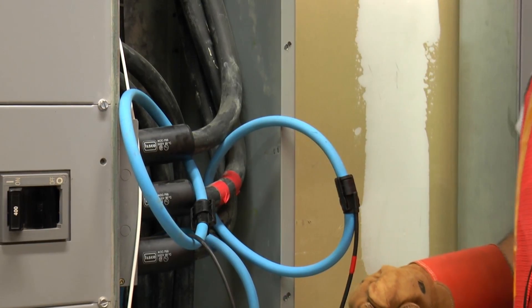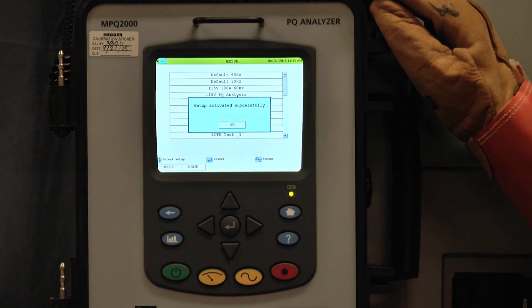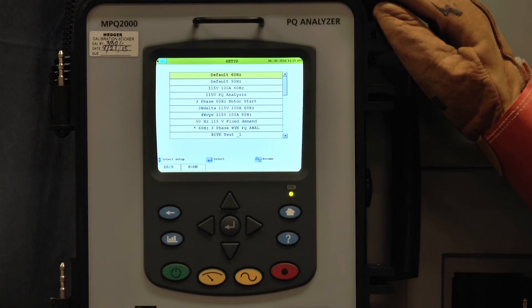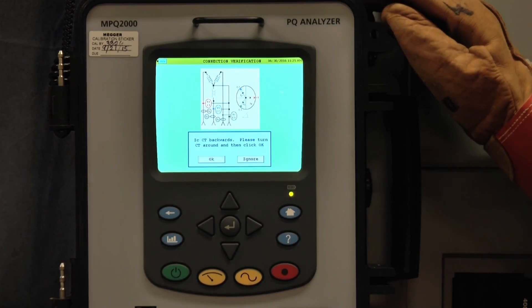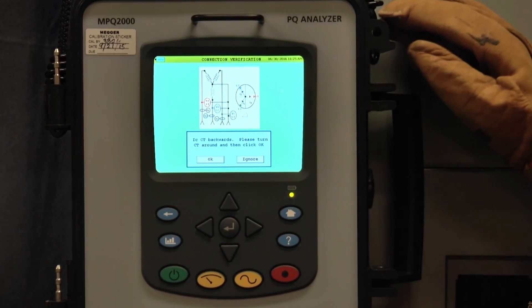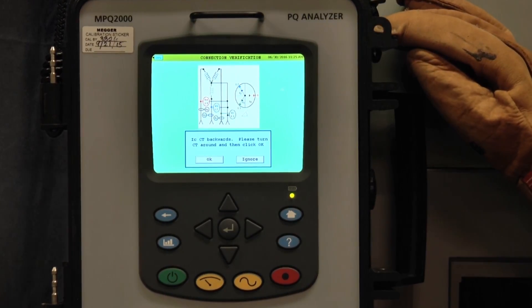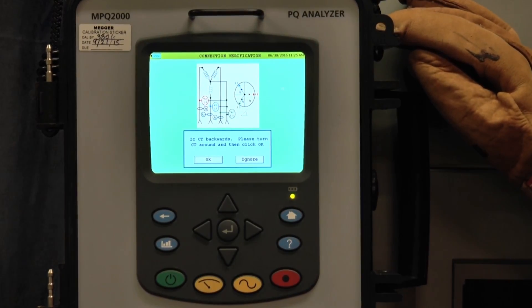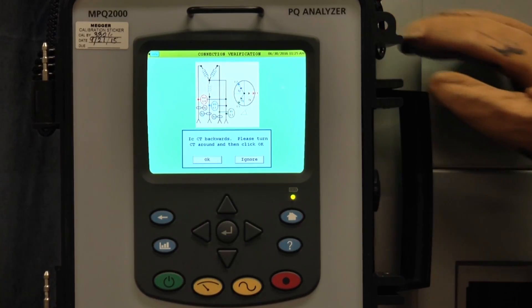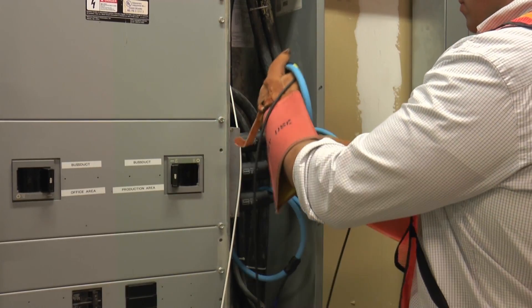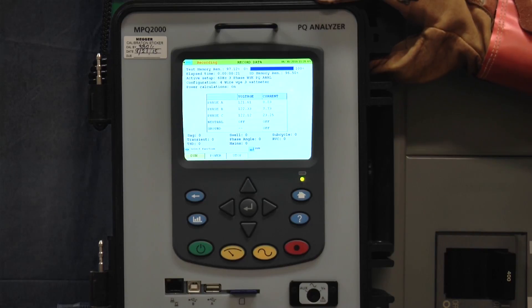Simply connect the unit. Select the desired setup configuration. Start the recording. The unit will let you know if it is not connected properly. You can see that the phase C current clamp is backwards. Let's turn it around. The unit is now recording.